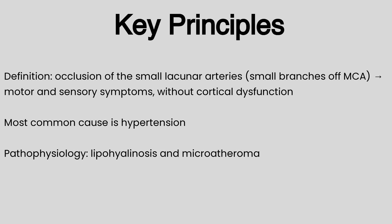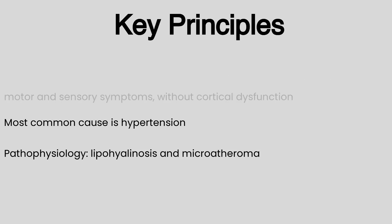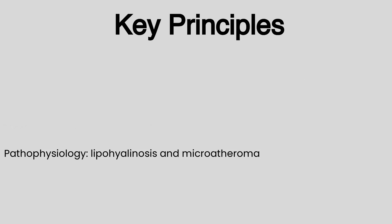Our next topic of review, Lacunar Stroke Syndromes, is an extension of the previous discussion on stroke. A lacunar stroke is defined as occlusion of the small lacunar arteries — these are small branches off the MCA — which penetrate the brain parenchyma, resulting in motor and sensory symptoms without cortical dysfunction. By far the most common cause is hypertension. The pathophysiology is due to underlying lipohyalinosis and microatheroma.